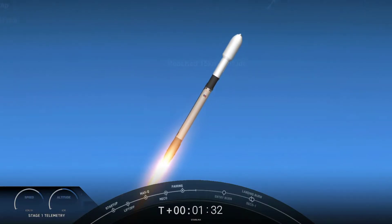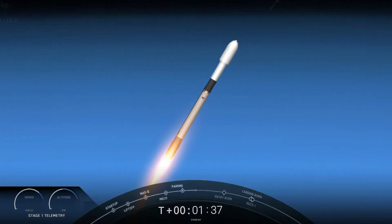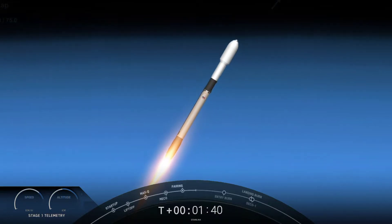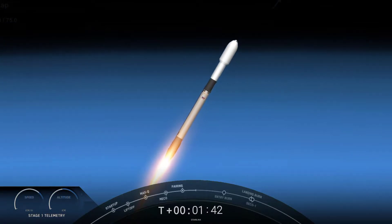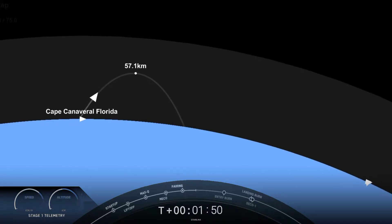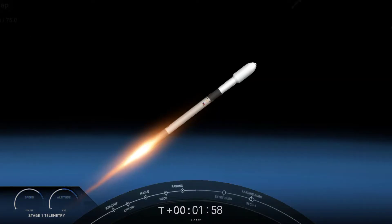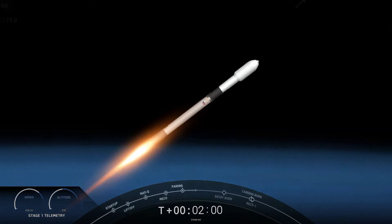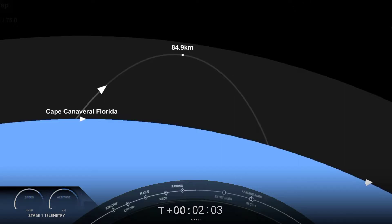First will be MECO, or main engine cutoff, and that's where all nine of the Merlin engines will shut down. And that slows the vehicle down in preparation for the second milestone, which is stage separation. Start of MVAC engine chill. That's where the first and second stage separate from each other. First stage will start to make its way back to Earth, and the second stage will continue on its journey with SES-1, or second stage engine startup one, and that's where the single Merlin vacuum engine will light up and propel the second stage along with the Starlink satellites to orbit.